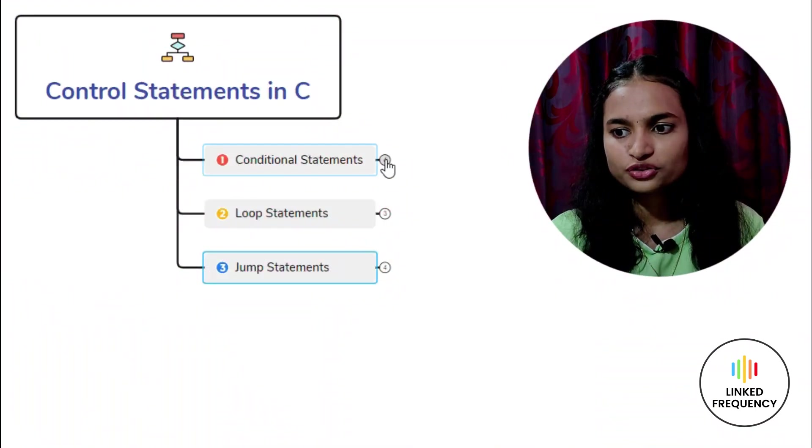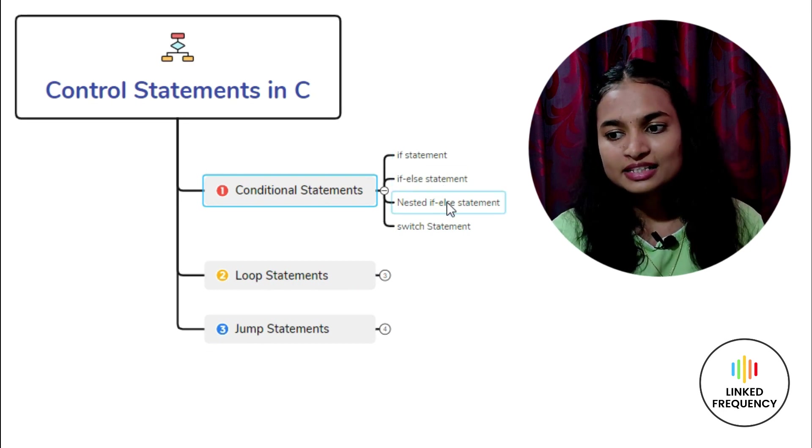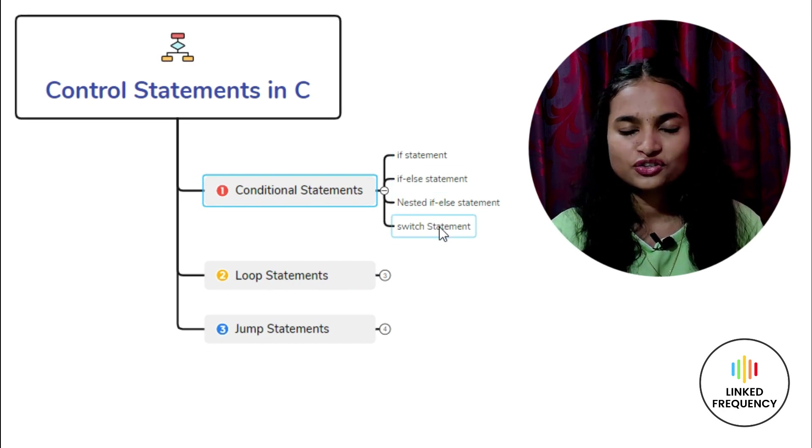The first type is conditional statements. These are the statements which help in implementing decision making in the program. A conditional statement selects a set of code blocks to execute based on whether a condition is satisfied or not. The result of the program depends on the condition indicated. Conditional statements include: if statement, if-else statement, nested if-else, and lastly the switch statement.